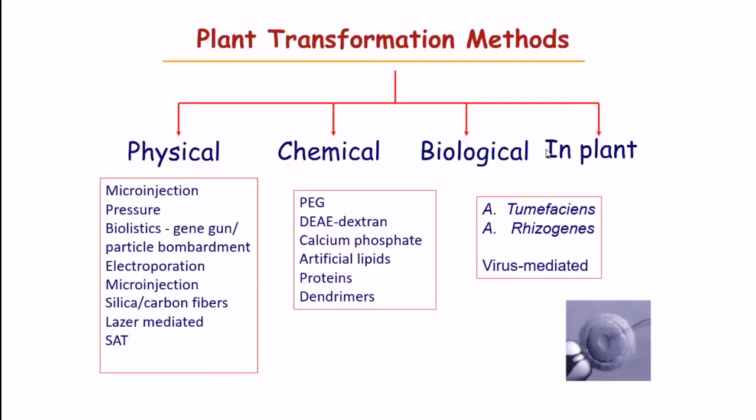Plant transformation methods are of three types: physical, chemical, and biological. The most efficient method is biological using Agrobacterium tumefaciens or Agrobacterium rhizogenes, which are virus-mediated. These naturally occur in plants where they cause crown gall disease.